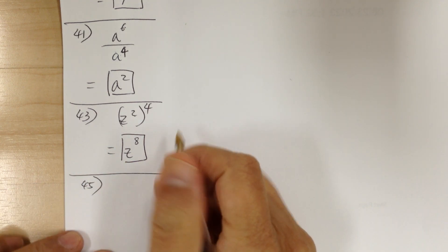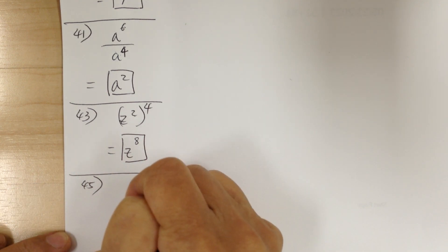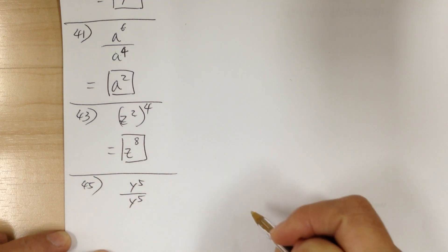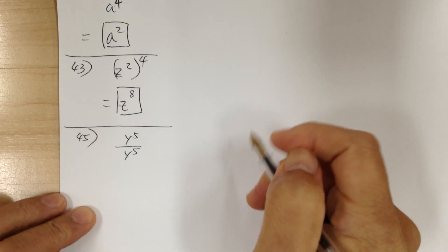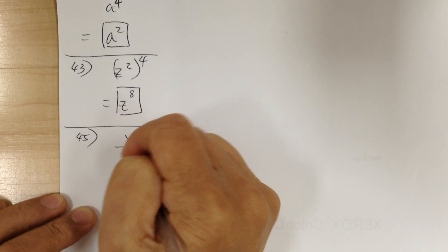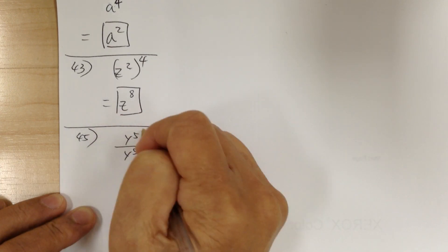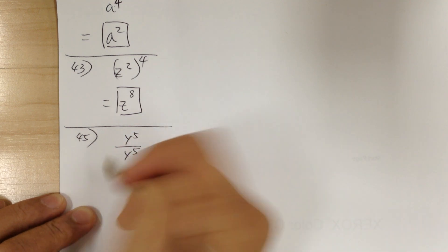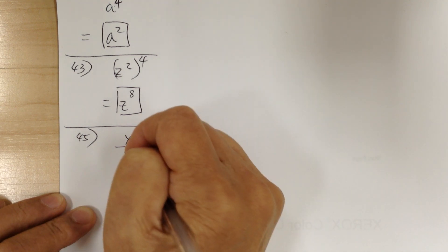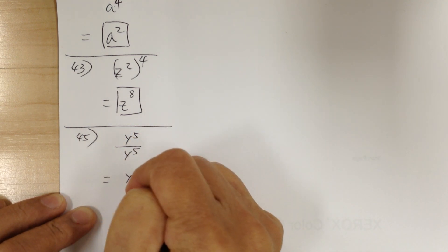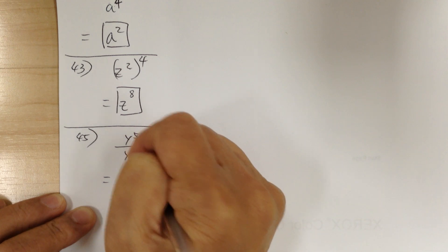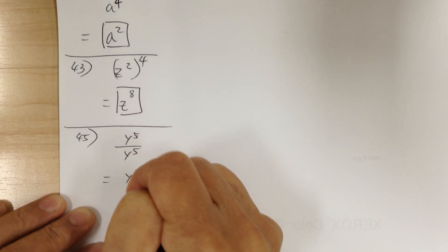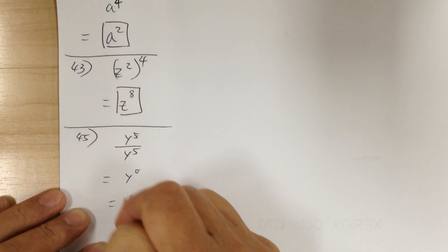Number 45, you've got y to the 5 over y to the 5. Notice they're the same. When you divide, they equal 1. Or if you subtract, this equals y to the 0 — since 5 minus 5 gives you 0 — and anything to the 0 power is equal to 1.